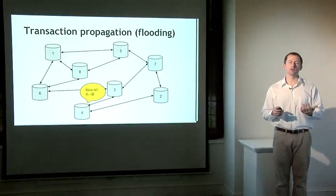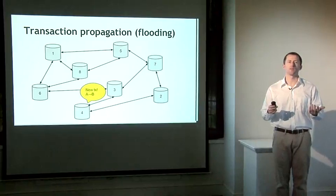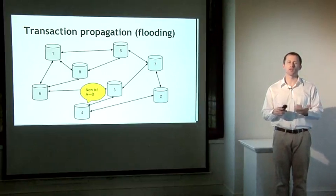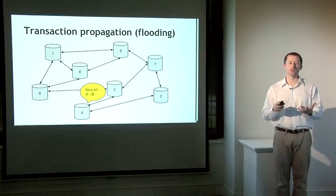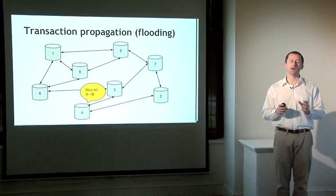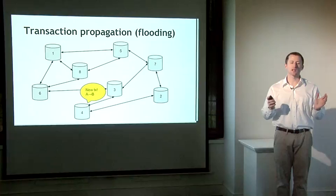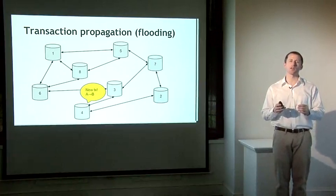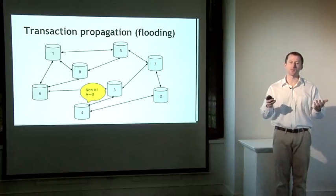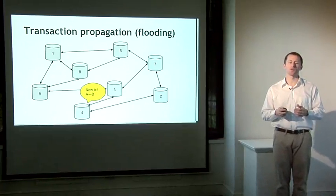Let's say node 4 hears about a new transaction — Alice wants to pay Bob some money. Alice creates a Bitcoin transaction and submits it to node 4, or maybe her wallet software or her exchange does that on her behalf. Node 4 says, great, I've got a new transaction — Alice wants to pay Bob — let's tell everybody about it. Sometimes this is called a gossip protocol, because if you have news, you try to tell as many people as you can, and they try to tell as many people as they can, much like people gossiping in the real world.